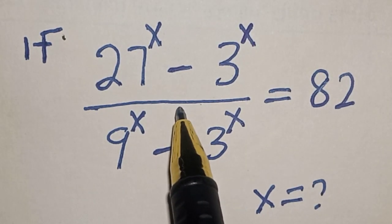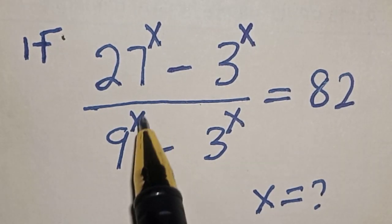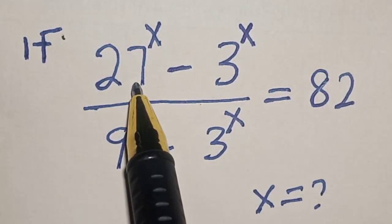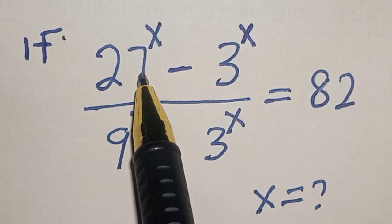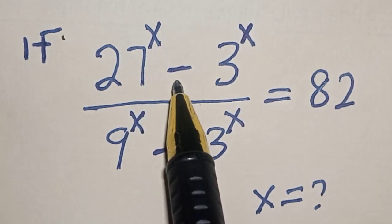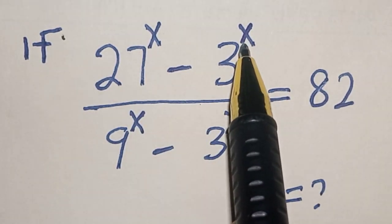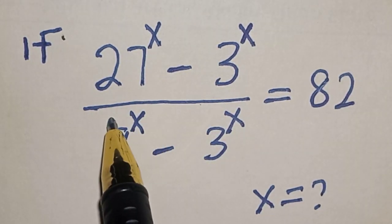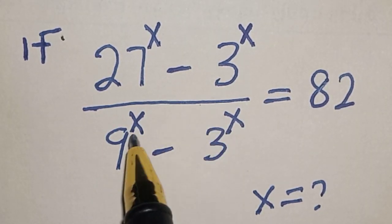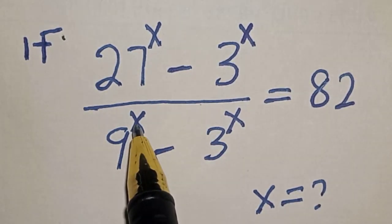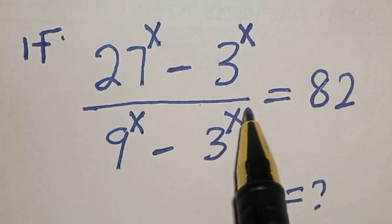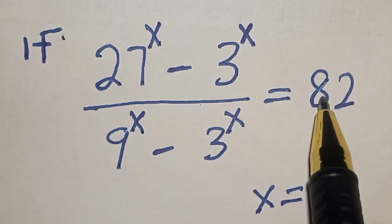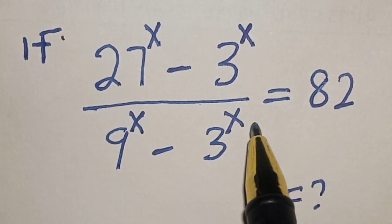Hello, welcome to Math Gist. In this class, we want to find the value of s from this equation: 27 raised to power s minus 3 raised to power s, divided by 9 raised to power s minus 3 raised to power s, is equal to 82.